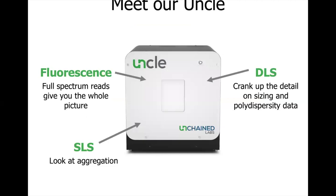Let me first introduce you to our UNCLE. UNCLE is a multimodal biologic stability platform that combines three detection methods: fluorescence, static light scattering (SLS), and dynamic light scattering (DLS). UNCLE can measure the full spectrum fluorescence from 250 nm to 720 nm to look at both the intrinsic fluorescence of tryptophan and tyrosine and the fluorescence of protein dyes.